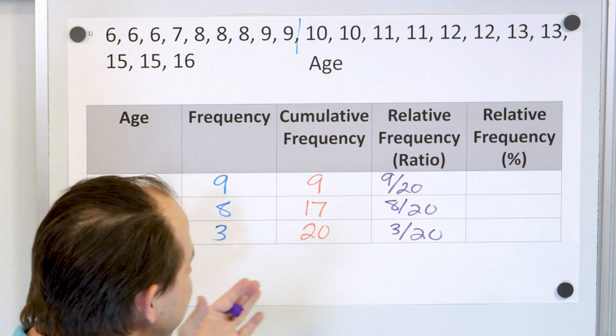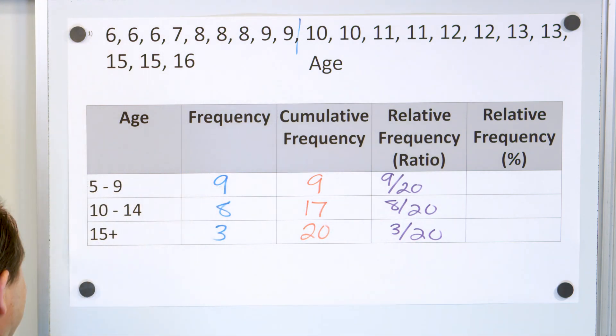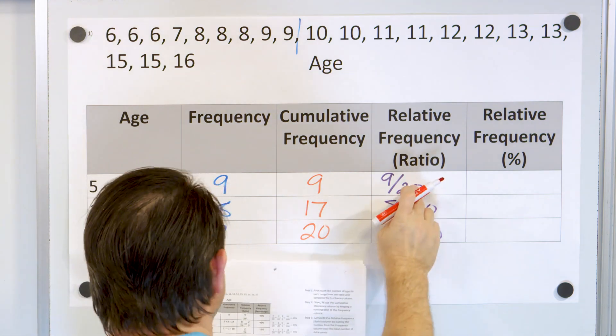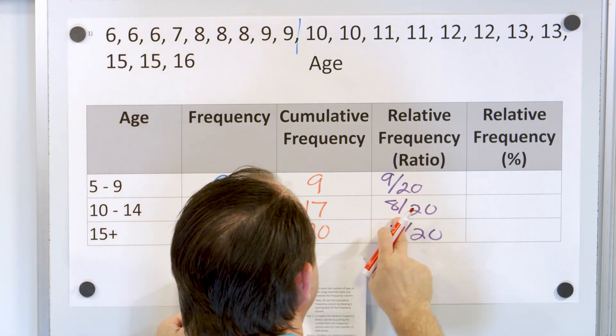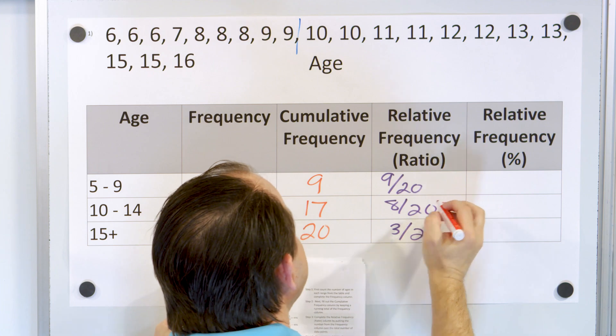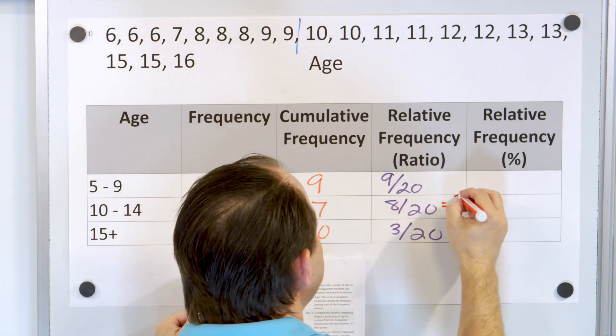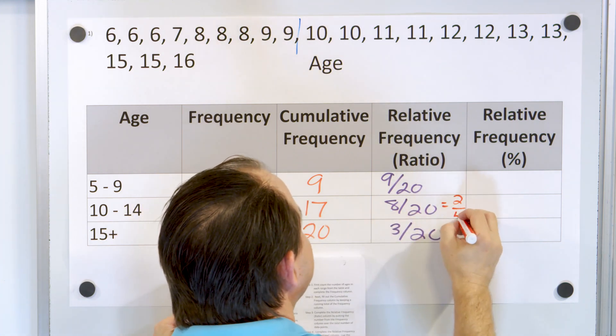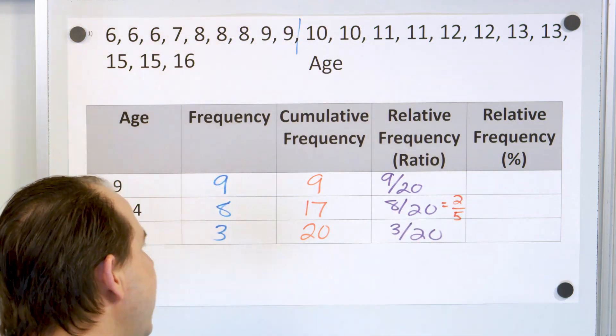Now we can also simplify these fractions. We don't have to but we can, right? Now 9 20ths can't really simplify but 8 20ths can. We can divide both by 4, right? And if we divide 8 by 4, we'll get 2 and 20 divided by 4, we'll get 5. So really 2 fifths is a simplified version of this.